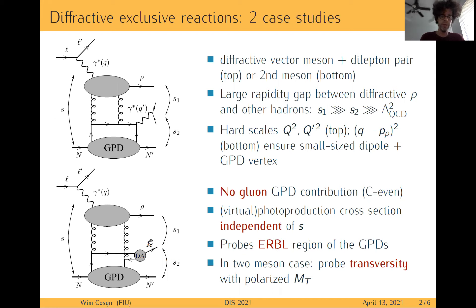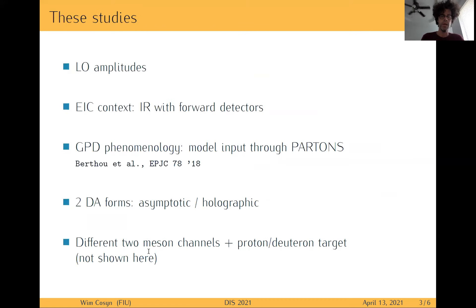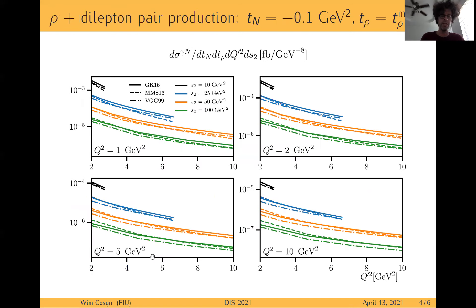In the two meson process, you can also probe transversely by detecting a transversely polarized meson in the bottom part of the diagram. We did a study for EIC kinematics, looking at different non-perturbative inputs: different GPD models interfaced to PARTON, different distribution amplitudes for the mesons, and different meson channels with proton and deuteron targets.